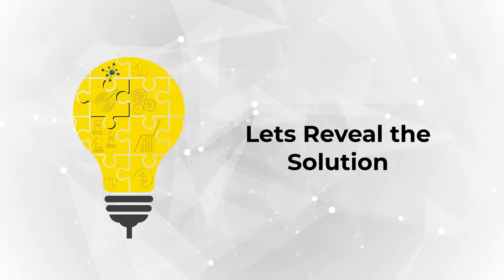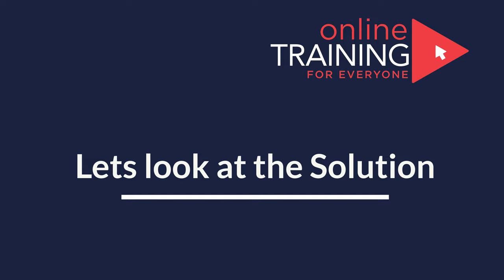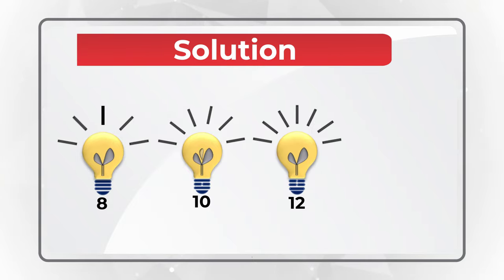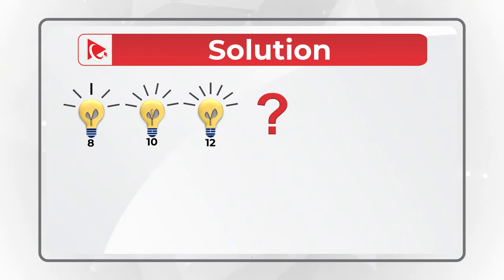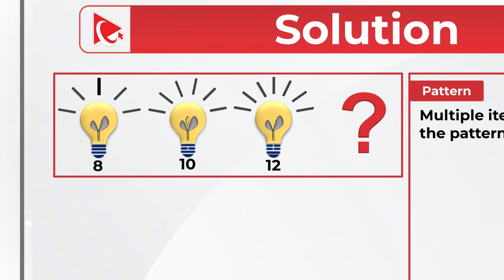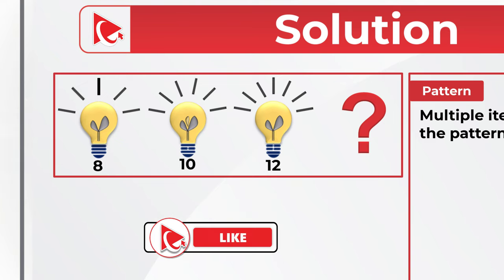Ready or not, I am moving forward to get you to the correct solution. But if you need more time, please pause this video. To answer questions like this, you need to determine the pattern. There are multiple items that define the pattern: rays, petal leaves inside the bulb, the number at the bottom of the bulb, and the number of parts at the bulb's bottom construction.